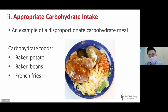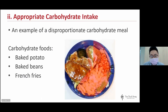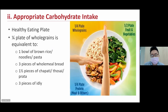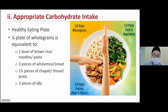For appropriate carbohydrate intake, be mindful of portion sizes of rice or noodles at lunch or dinner — larger portions mean more carbohydrates, which affects blood sugar. An example of a disproportionate carbohydrate meal might include baked potato, baked beans, and french fries, where carbohydrates make up more than half the plate. According to the Health Promotion Board, one quarter of your plate should be filled with whole grains — equivalent to one bowl of brown rice, noodles, or pasta; three pieces of wholemeal bread; one and a half pieces of chapati; or three pieces of idli.